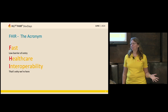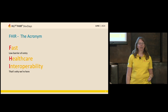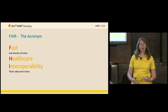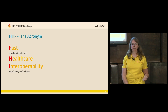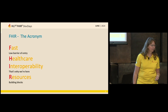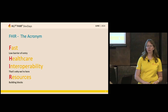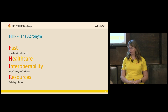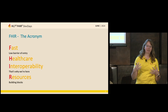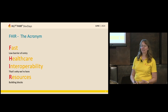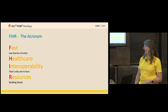The H and the I are the most important letters in the acronym: Healthcare Interoperability. The main reason we have a standard like this is so we can share data in an interoperable way. The R stands for Resources — the building blocks in FHIR. Resources are the small bits of data, the bits of information that we can communicate or retrieve from systems.